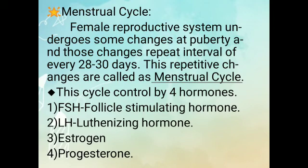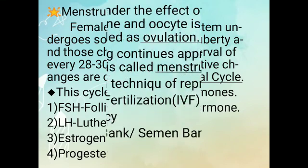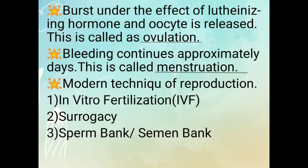This cycle is controlled by 4 hormones. First: FSH — Follicle Stimulating Hormone. Second: LH — Luteinizing Hormone. Third: Estrogen. And fourth: Progesterone. Under the effect of Luteinizing Hormone, an oocyte is released — this is called ovulation. Bleeding continues for approximately 5 days — this is called menstruation.